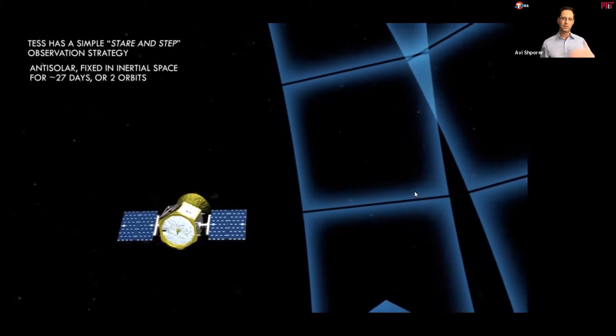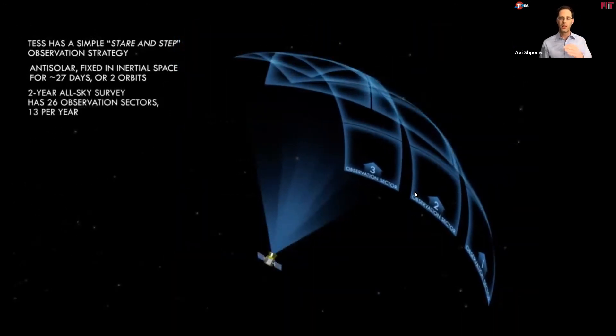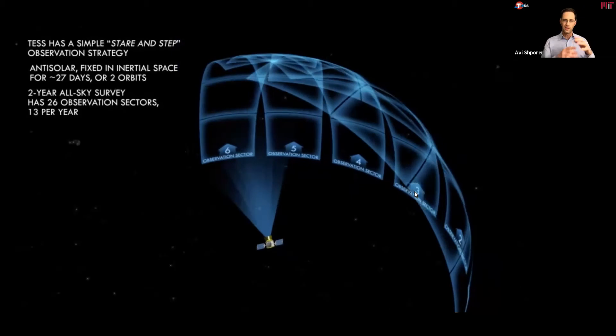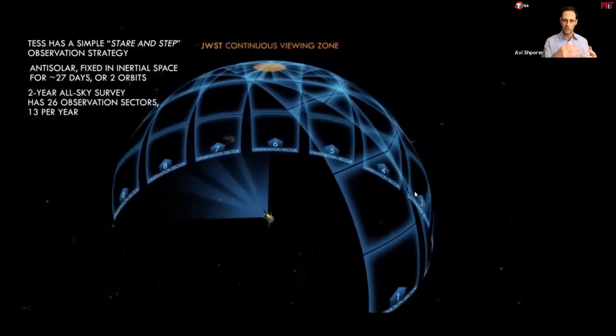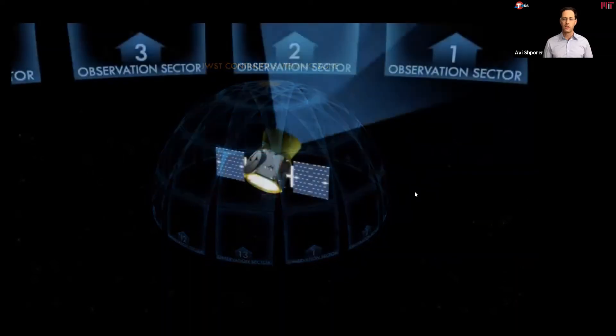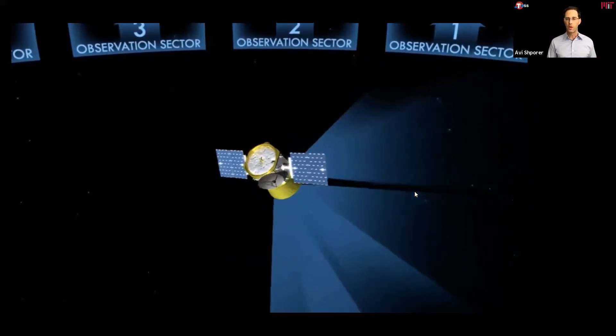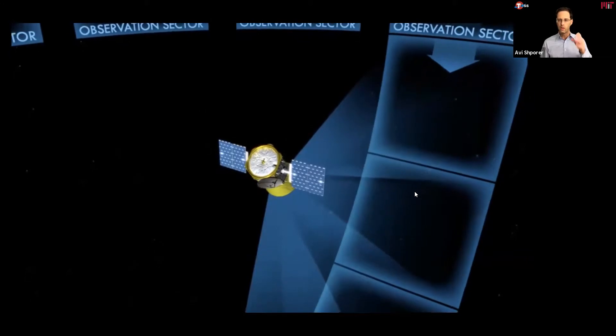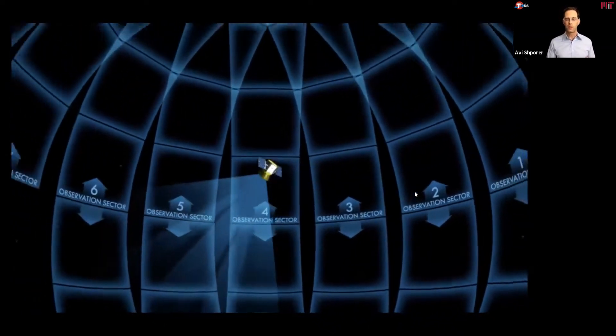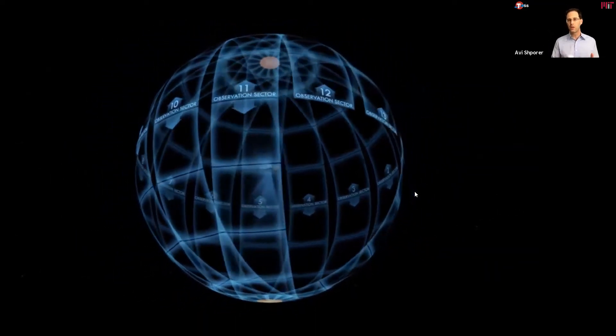So every 27 days, moving on to another sector. So after 13 sectors that take one year, the entire celestial hemisphere is covered. And you can also see that at the pole, there is an overlap of all the sectors. So there is a continuous viewing zone where we can observe the stars continuously for a year. And after one year, we have the big flip where the satellite flips from one hemisphere to the other, and then continues in a very similar way, one sector at a time for 27 days, then rotating for the next sector and so on, and then completing the other hemisphere as well. And this is how during the primary mission, TESS has completed covering almost the entire sky.